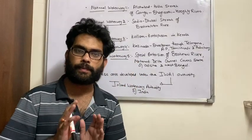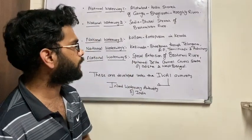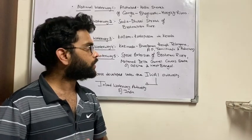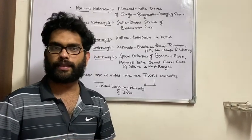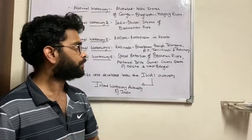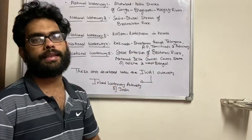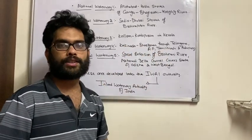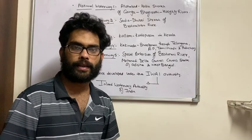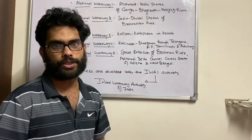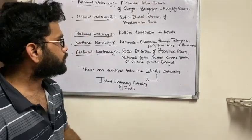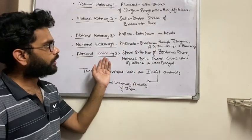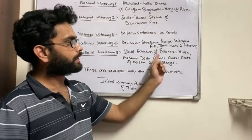National Waterway 4 passes through the states of Telangana, Andhra Pradesh, Tamil Nadu, and the Union Territory of Puducherry. The particular cities it covers are Kakinada and Marakkanam. Kakinada is in Andhra Pradesh. So you should know these states.